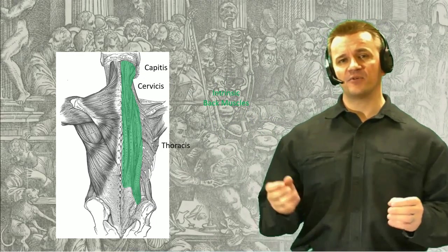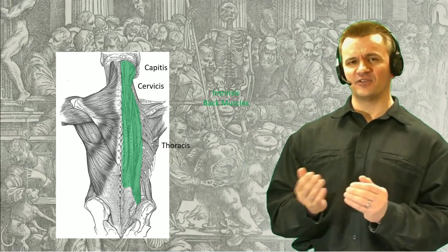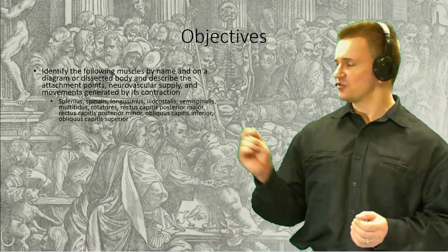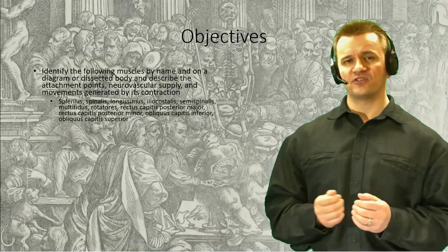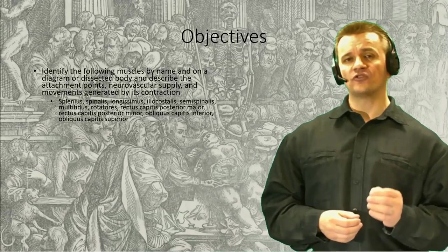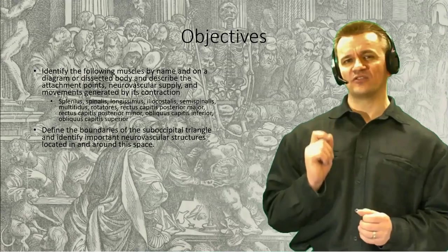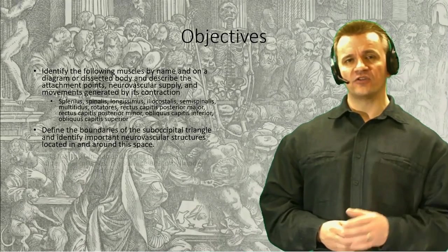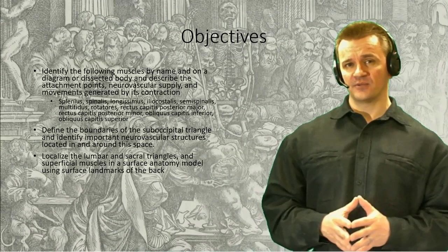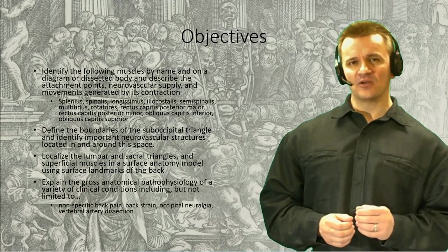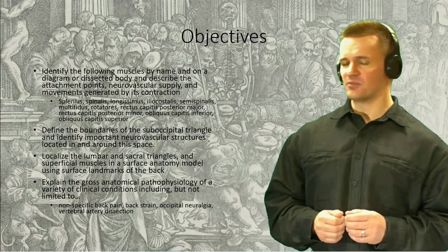In general, however, the fibers from each region blend in and are difficult to differentiate from one another. Our objectives for this session will be identification of the intrinsic back muscles and proficiency in describing their attachments. Neurovascular supply and actions will also be covered, paying specific attention to a region known as the suboccipital triangle and the neurovascular structures found there, along with surface anatomy and a few clinical conditions.